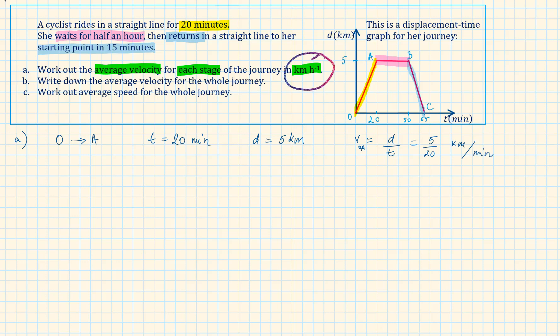The question is asking us to do it in km per hour, not km per minute. How do we convert it? To convert km per minute into km per hour, we need to times by 60. This is equal to 15 km per hour.